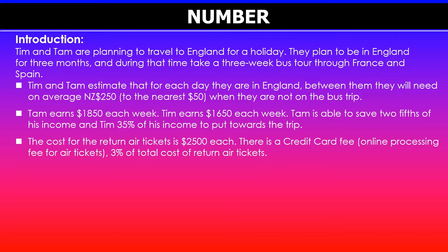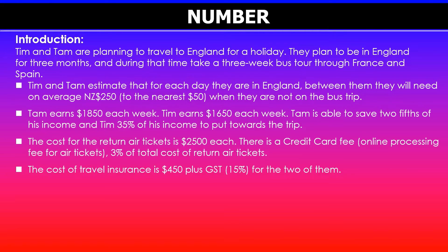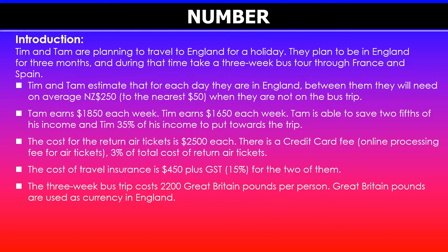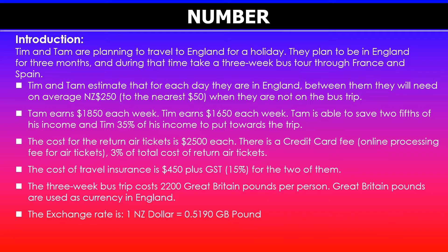There is also a credit card fee, which is the online processing fee for air tickets, and this is 3% of the total cost of return air tickets. We are also given the travel insurance, which is $450 plus GST, and GST in New Zealand is 15% for both of them. We also know that the three-week bus trip will cost them $2,200 in Great British pounds per person — this is the currency used in England. The currency exchange rate is one New Zealand dollar is 0.519 Great British pounds.